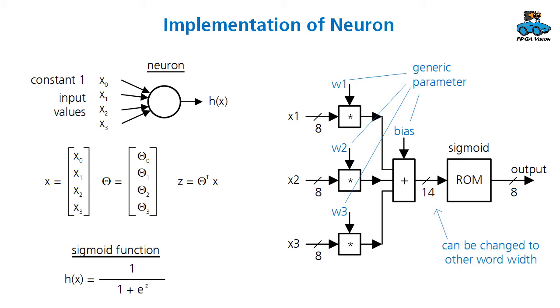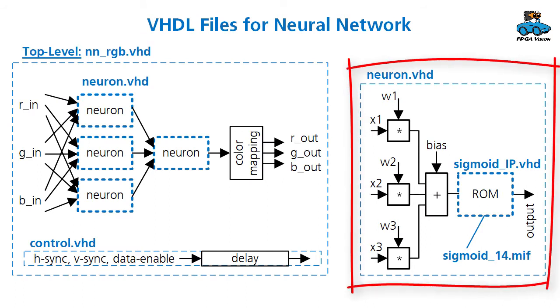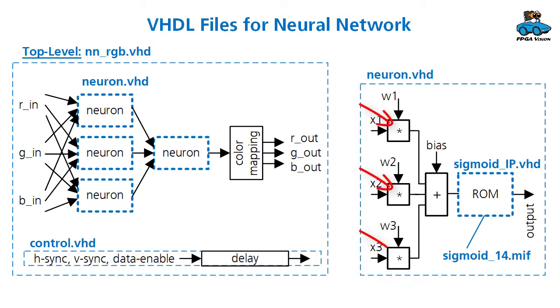The word width can be changed. We have 14 bits here, but other values are possible, which gives a different resolution. The submodule Neuron.VHD follows this structure. We have the multiplications, we have an addition. Then we use the submodule for implementing the sigmoid function as a ROM. Here we have a MIF file with a memory content.